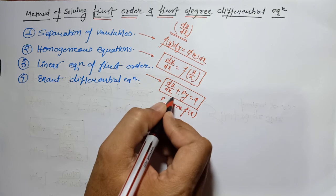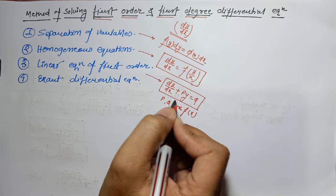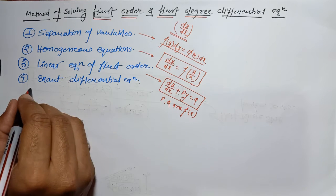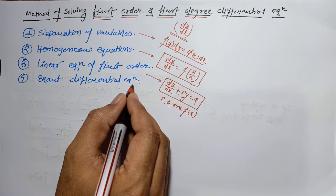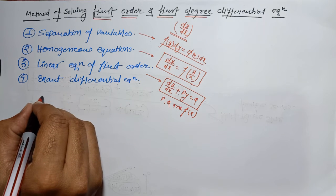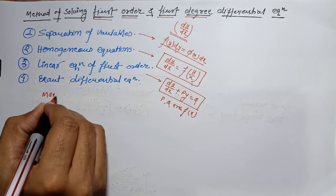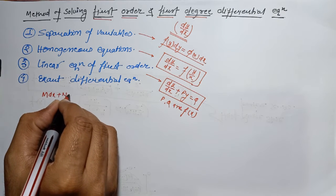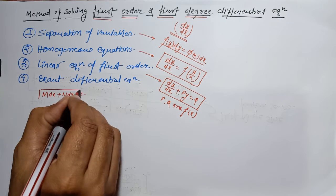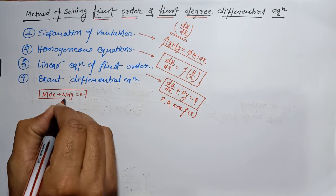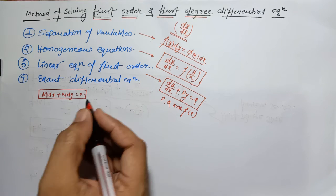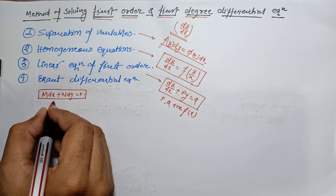We will see how to solve this type of differential equation. The last method is the exact differential equation. If we can write a differential equation as M dx + N dy = 0, these types of differential equations satisfy some special conditions, and we can solve them very easily with particular equations.